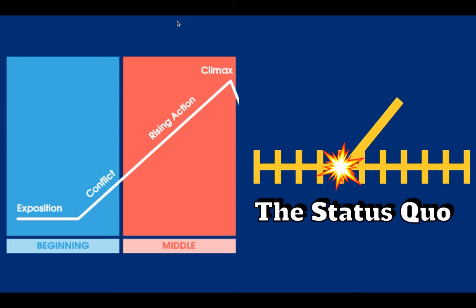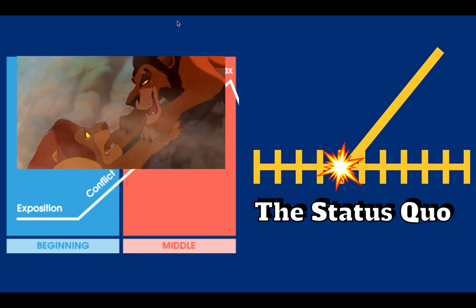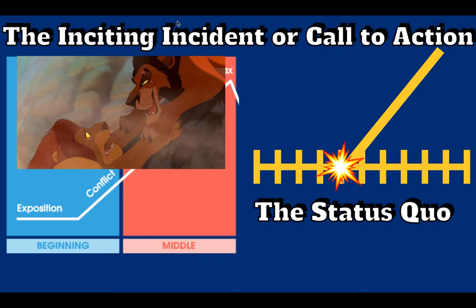Something happens to cause the pyramid to shoot up. What changes the status quo — what event changes normal life? Well, in the Lion King, obviously, that would be Scar killing Mufasa. It changes the status quo. Everything's all good: Simba's running around being a bit irresponsible, Mufasa's a good king — this is the normal status quo. As soon as Scar disrupts that and changes it, we have our inciting incident, or call to action.